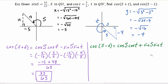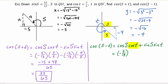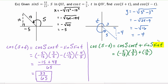Now we're ready to fill in the values. The cosine of s is x over r, so that's negative five over 13. Cosine of t is x over r, so three-fifths. Plus the sine of s, which is y over r — 12 over 13 — times the sine of t, which is negative four over five.